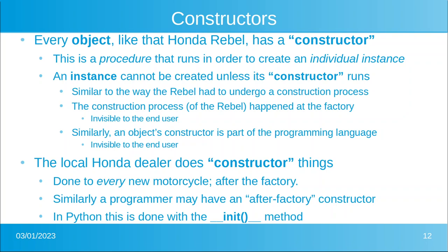Similarly, an object-oriented programming language constructs objects through a construction process that is invisible to the user. This is important because — just like a Honda dealer receives new motorcycles and runs a dealer prep procedure — a programmer can act like the dealer and create an after-factory constructor. This is very important for initializing certain parameters, such as the width and height of something on the screen. In Python, this is done with the __init__ method.